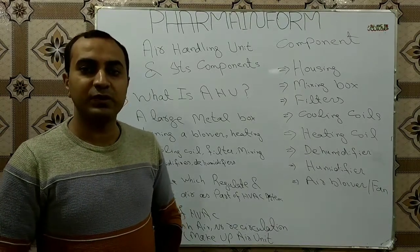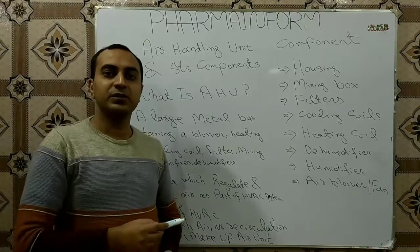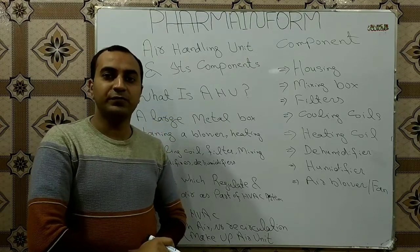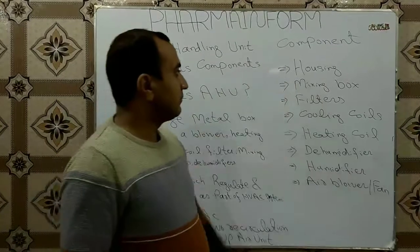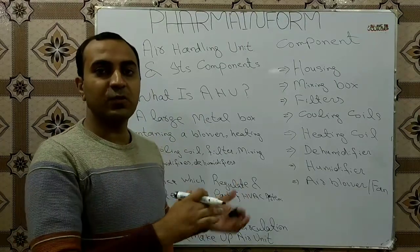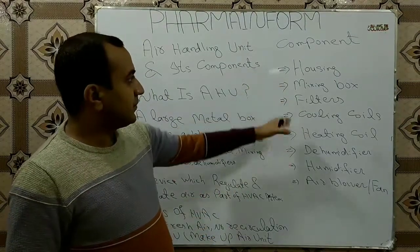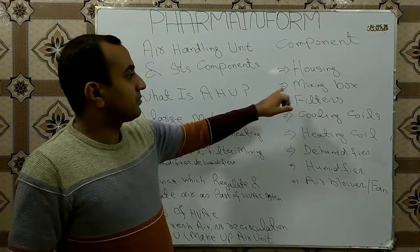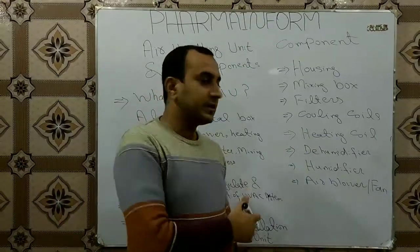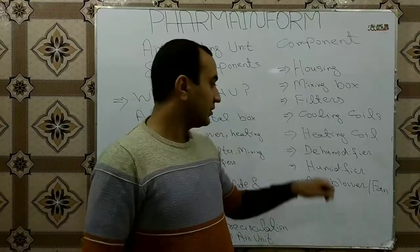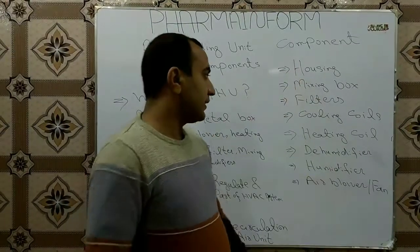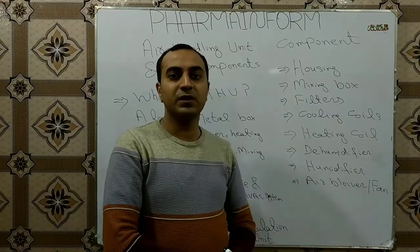So I hope you are now familiar with what is an air handling unit — it is a large box which we can easily see on the roof of different buildings. Now we will discuss the components of an air handling unit. AHU is a box that contains many different structures: housing, mixing box, filters, cooling coils, heating coils, dehumidifiers, humidifier, and air blower or fan.